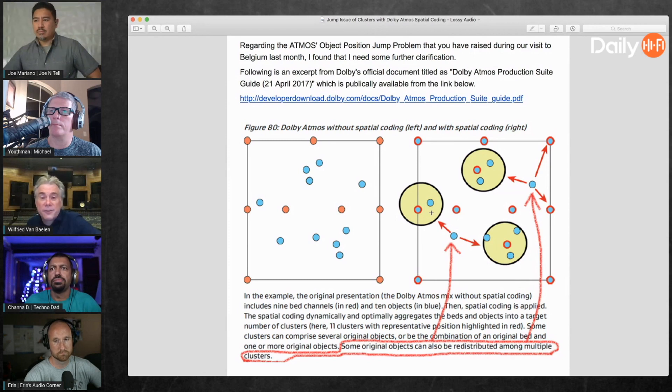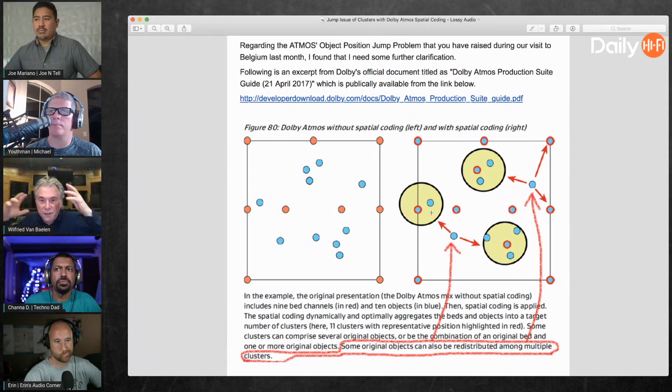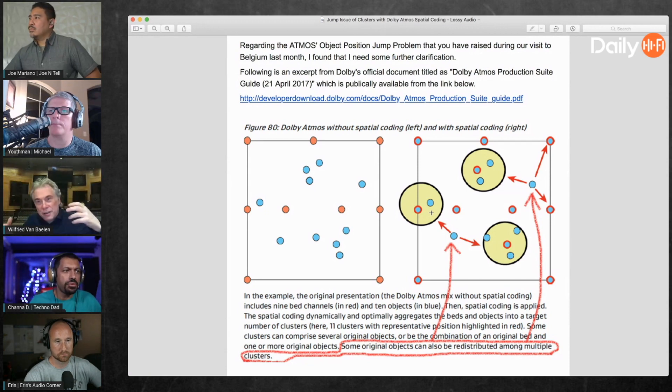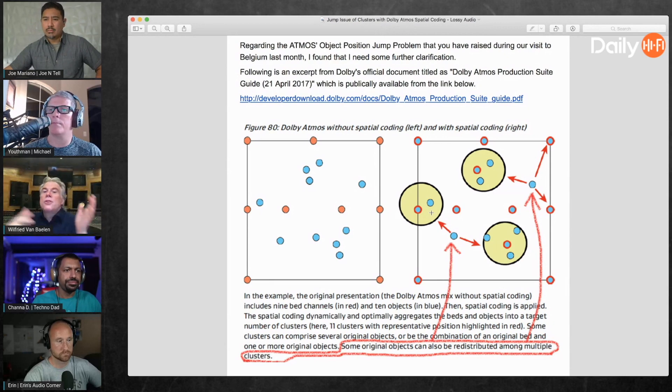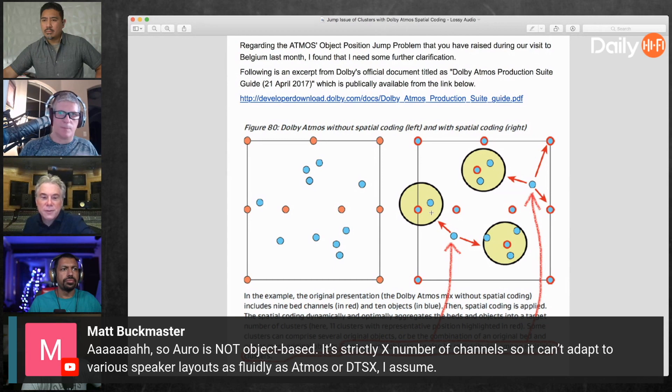But these are artifacts that our technology is not suffering from, because we have this in this channel-based thing, where as an engineer you decide which kind of panning law you use, and that will be exact the same panning law that you have in the reproduction, which is much less predictable in our competitor's form.